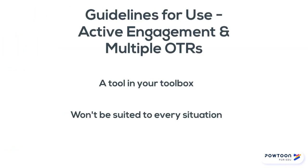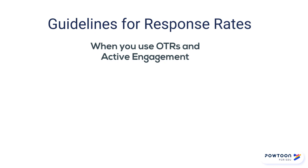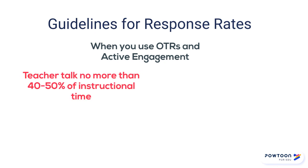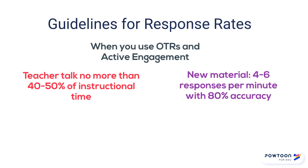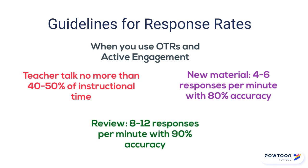Remember, as you think about classroom management and active engagement and multiple opportunities to respond, that these are tools in your toolbox and they won't be suited to every situation. As a general guideline, teacher talk should be no more than 40-50% of instructional time. For new material, aim for 4-6 responses per minute with 80% accuracy. For review, aim for 8-12 responses per minute with 90% accuracy.